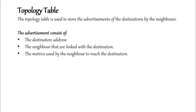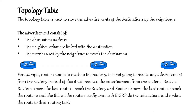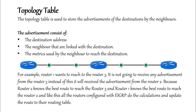The topology table is used to store the advertisement of destinations by neighbors. The advertisement consists of the destination address, the neighbors linked with the destination, and the metrics used by the neighbor to reach the destination. For example, Router 1 wants to reach Router 3. It will not receive any advertisement from Router 3 directly; instead, it will receive the advertisement from Router 2, because Router 2 knows the best route to reach Router 3. Like this, all routers configured with EIGRP perform calculations, update their routing tables, and choose the best route to transfer packets.